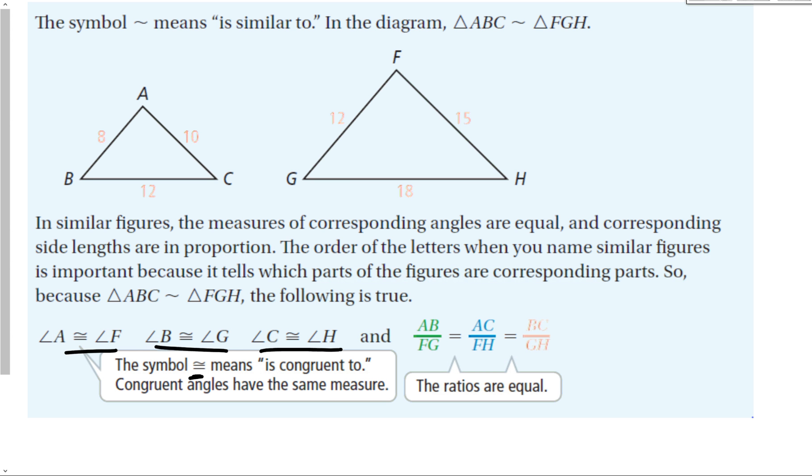That symbol means is congruent to. When we deal with numbers, we say that something like 3 is equal to 3, right? But when we deal with lengths inside of geometric figures, we use the congruent to symbol. My ratios are equal. So if you look at AB, this piece right here, over FG, that piece right there, that ratio is going to be equal to any other two that match up, like AC over FH or BC over GH. Any of the ratios of corresponding sides are equal to each other.